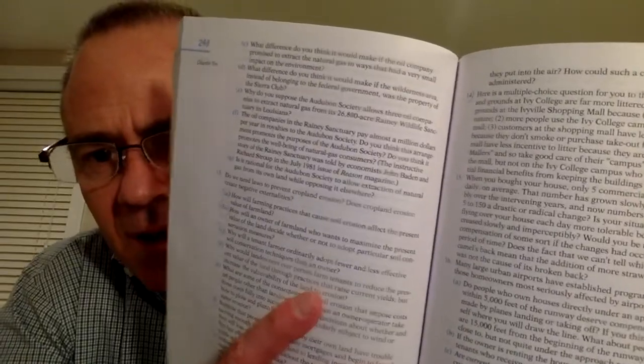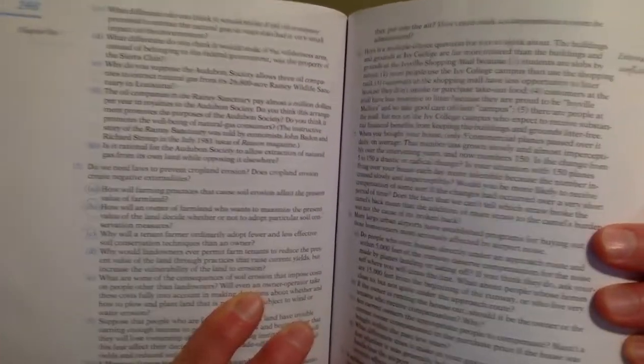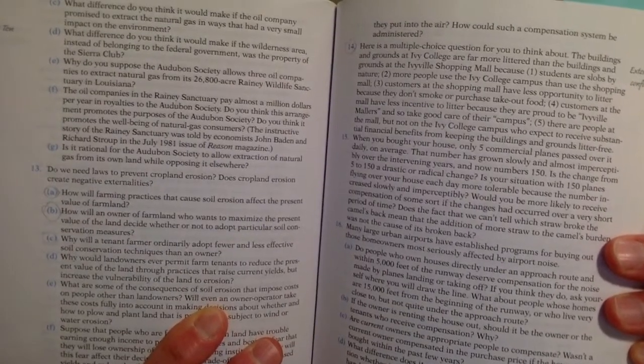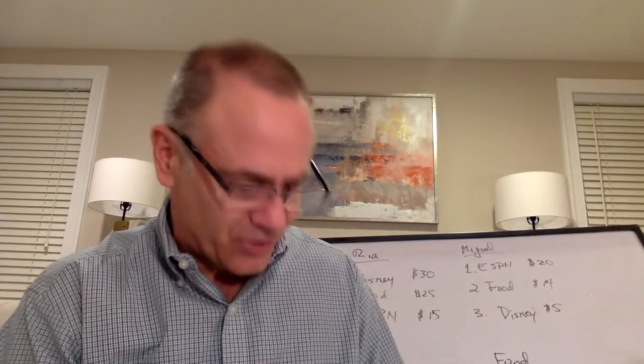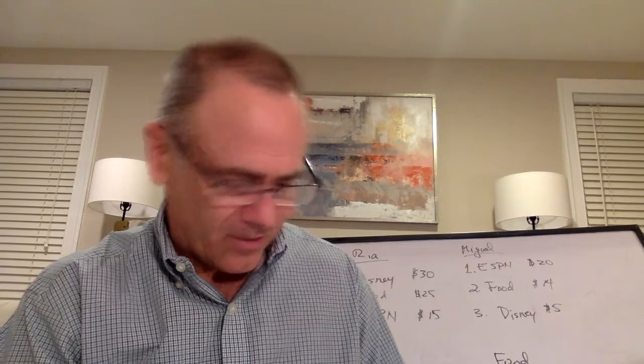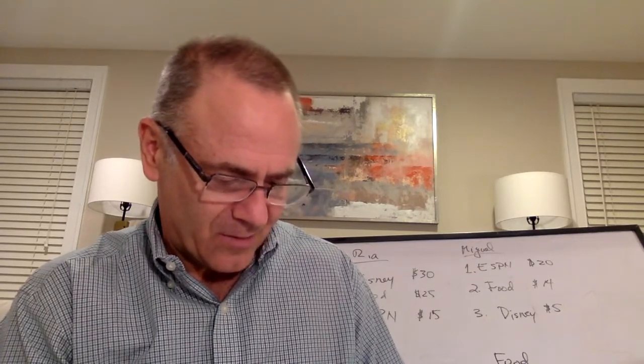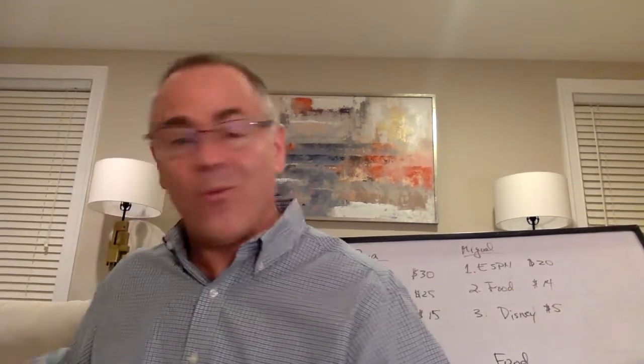Question 14: A multiple-choice question. The buildings and grounds at Ivy College are far more littered than those at Ivyville Shopping Mall. Why? The answer is option five: there are people at the mall — but not on the college campus — who expect to receive substantial financial benefits from keeping the grounds litter-free. The mall owner wants to keep it clean; otherwise, they can't attract as many tenants and command as high rents.